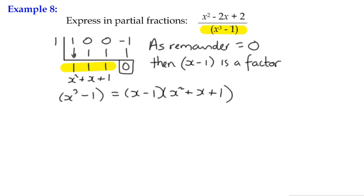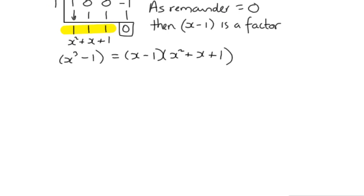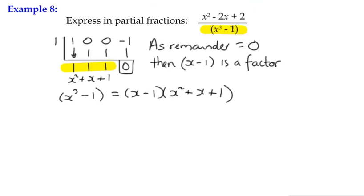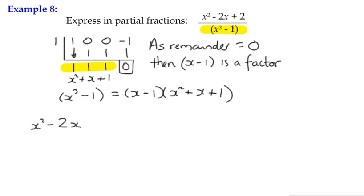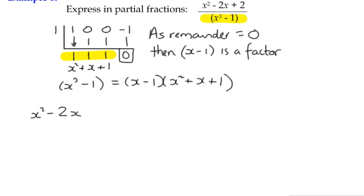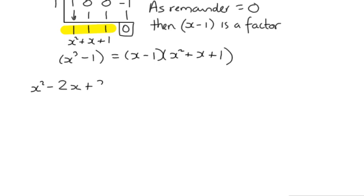So that's a little bit of synthetic division, as you might have done previously. So now we can rearrange, or now we can swap that in. Let's start almost again. Our rational function becomes x squared minus 2x plus 2 divided by our newly factorized expression x minus 1 multiplied by x squared plus x plus 1. It doesn't take you long to see that x squared plus x plus 1 is an irreducible quadratic. We cannot factorize that any further.